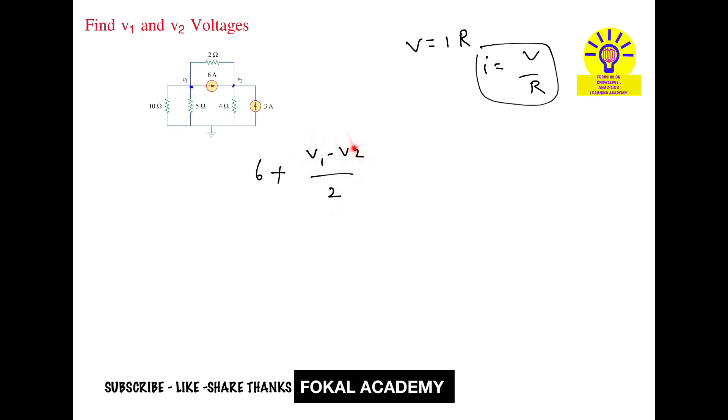Next, the current in 5 ohms: v1's lower voltage is 0, so that's v1 by 5. The current in 10 ohms is v1 by 10. That equals 0.